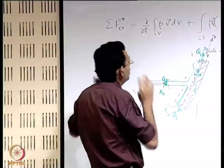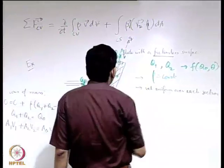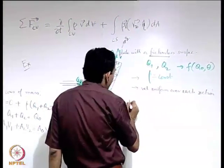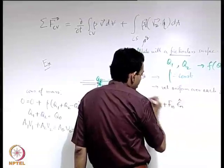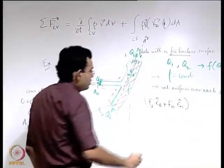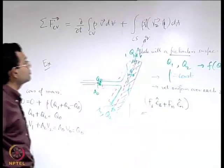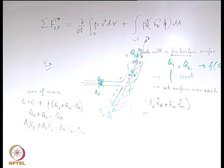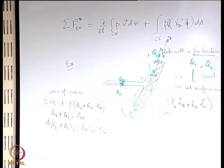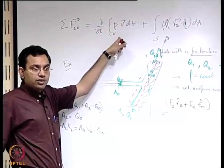Let us write the conservation of linear momentum in general vector form: F = Fs * ê_s + Fn * ê_n, where Fs = 0 from the physical consideration of a frictionless plate. For the right hand side, we assume steady flow, constant density, and fixed control volume — so the time derivative term is zero. We then come to the second term, which we evaluate for the three surfaces 0, 1, and 2 individually. Since velocities are uniform over each area, the integral reduces to a sum over sections.